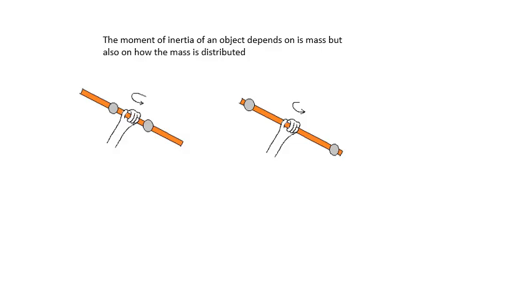The moment of inertia of an object will depend on its mass, but it also depends on how the mass is distributed. A nice little experiment you might do. Imagine you've got a meter ruler, and you attach a couple of masses to the meter ruler, and then you hold it in the middle and try and turn it. If the masses are close to the axis of rotation, the line about you turning it, then it's quite easy. If the masses are further away, it's a lot harder. The moment of inertia depends on how the mass is distributed.